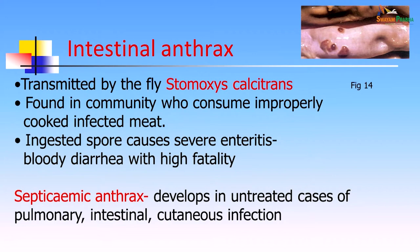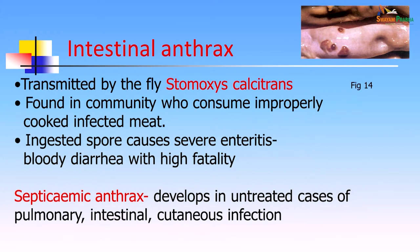Intestinal anthrax is transmitted by the fly Stomoxys calcitrans. It is found in communities consuming improperly cooked infected meat; ingested spores cause severe enteritis presenting as bloody diarrhea and has a high fatality. All three types — cutaneous, pulmonary, and intestinal — can result in septicemic anthrax, which develops in untreated cases. This patient's cutaneous infection, though mild, could have landed up in septicemia if left untreated. Fortunately, the patient presented early and the clinician had a high index of suspicion because of the patient's Karnataka origin, so he was treated in time.